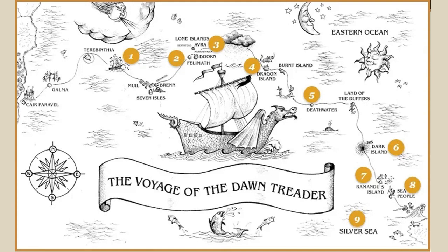They are kidnapped and put in chains. Before they make it to the slave market, they come across a nobleman — Lord Berne — who decides to purchase Caspian because Caspian reminds him of his former king, Caspian IX. After a conversation, Caspian reveals he is actually the son of Caspian IX. They hatch a plan to reclaim the islands and end the slave trade. They put on their finest knightly armor, march into Governor Gumpas's hall, demand he pay taxes and abolish the slave trade, and Caspian appoints Lord Berne as governor of the island.